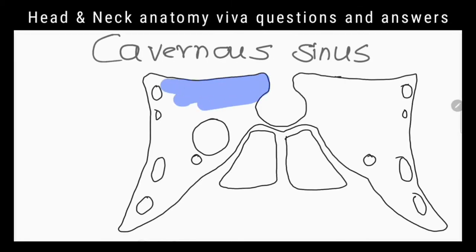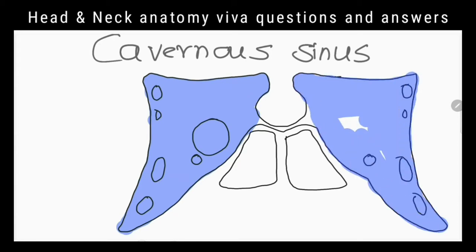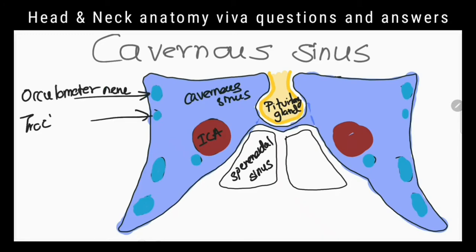What is the location of cavernous sinus? It lies on either side of the body of sphenoid. What is the medial relation? Pituitary gland. What lies within the cavernous sinus? Internal carotid artery and abducent nerve.